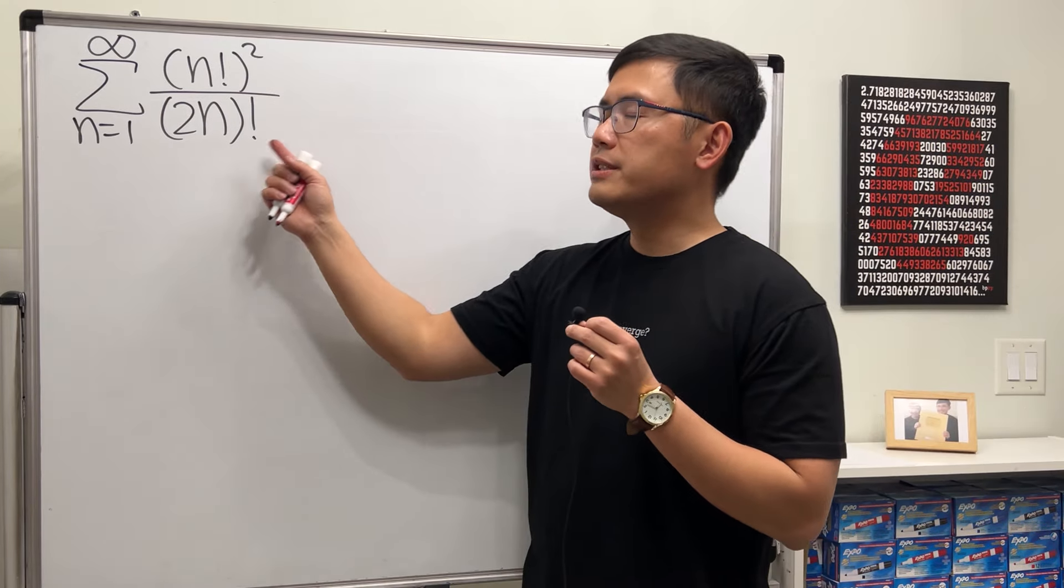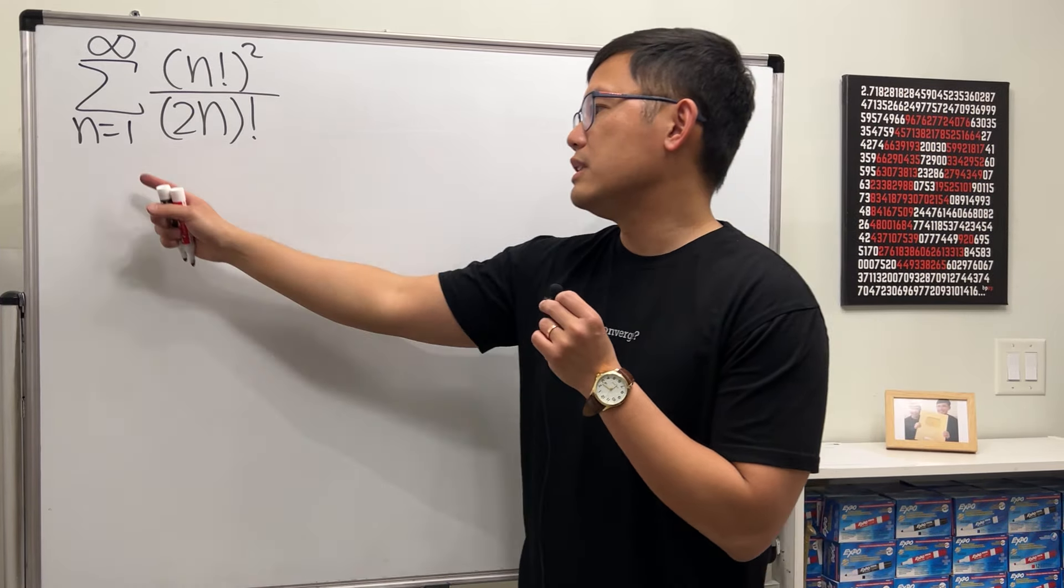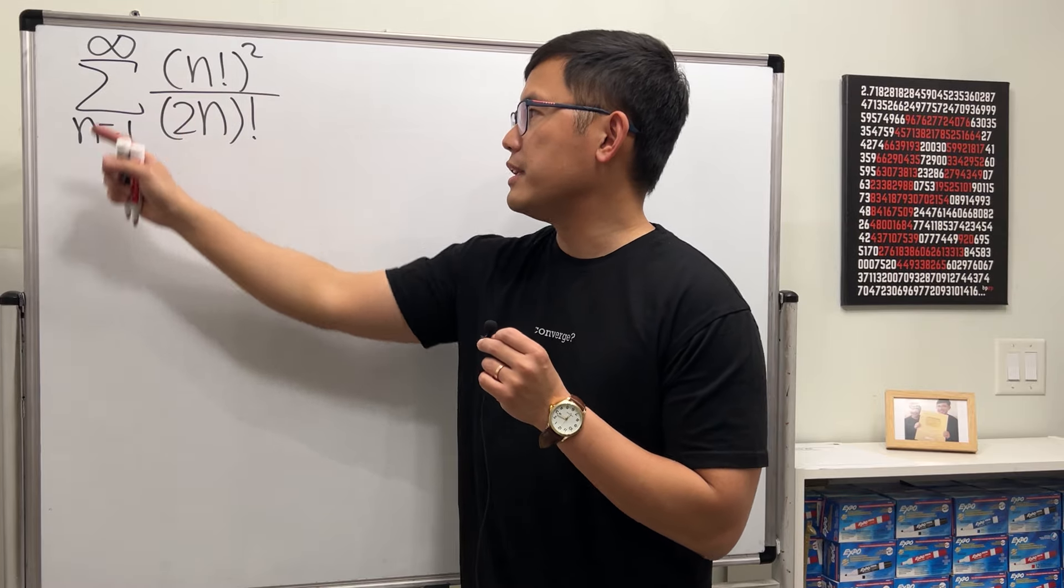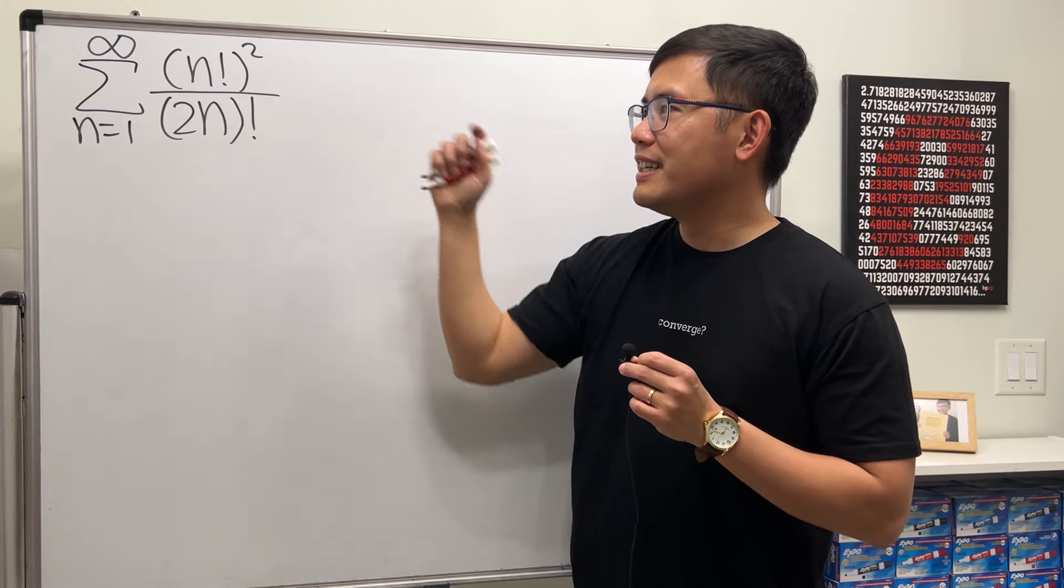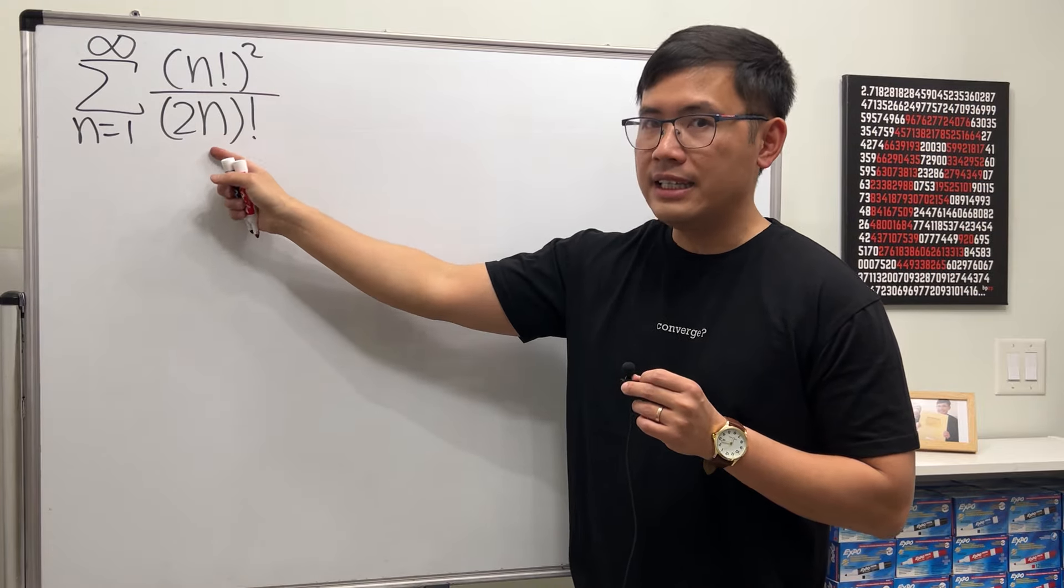Okay, we are going to see if this series converges or not. We have the series as n goes from 1 to infinity, and then here we have n factorial and then we square that, and then 2n inside and then we factorial that.